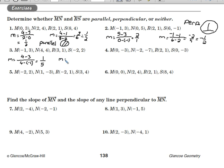For RS, 2 minus 1 over negative 2 minus 3 gives us 1 over negative 5. They're not the same, so they're not parallel. Nor are they opposite reciprocals. 1/5 and negative 1/5 are simply opposites. They are neither parallel nor perpendicular.